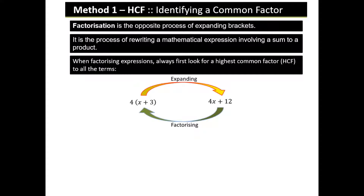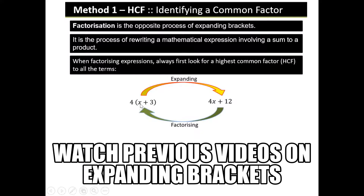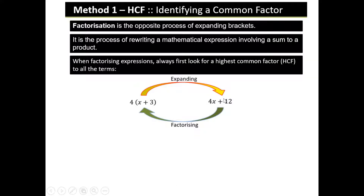We'll have a look at an example. As you can see in this flowchart, if you are removing the brackets that's expanding — so we can remove the brackets by multiplying. If I'm multiplying 4 times x I will get 4x, and 4 times 3 is 12. So that's expanding, and factorization is the reverse process to expanding.